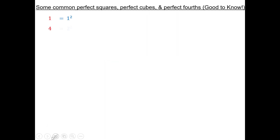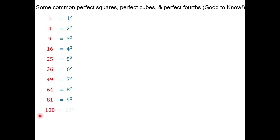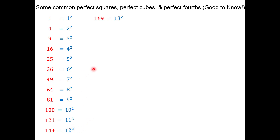Some common perfect squares, perfect cubes, and perfect fourths — these are numbers you don't have to necessarily memorize, but it's good to recognize them as they come up so you don't have to think about it every time. If you know these, you can quickly go backwards and find their square roots. For example, the square root of 49 would be 7 because 7 squared is 49. It's good to know at least the first 12 perfect squares. 13 squared is 169, 14 squared, 15 squared, and skipping ahead: 20 squared is 400, 25 squared is 625, 30 squared is 900.